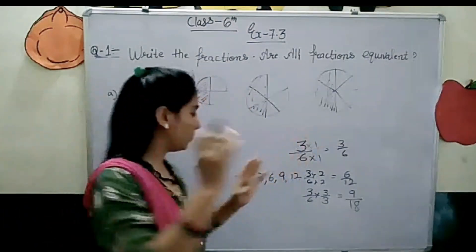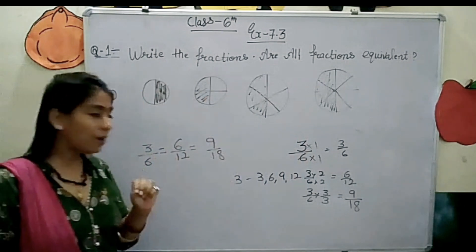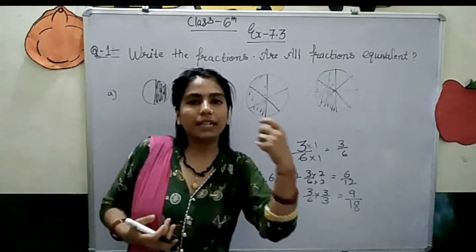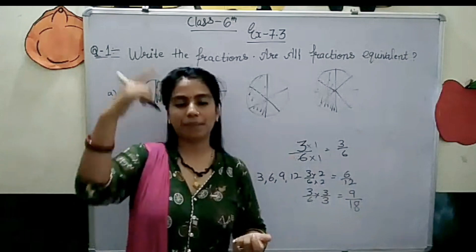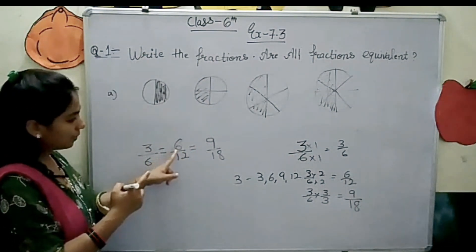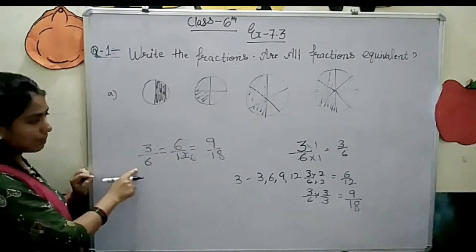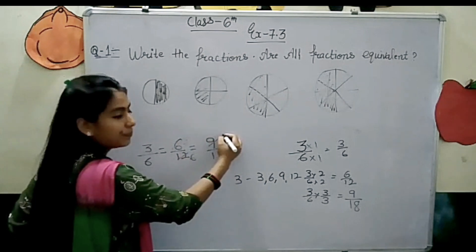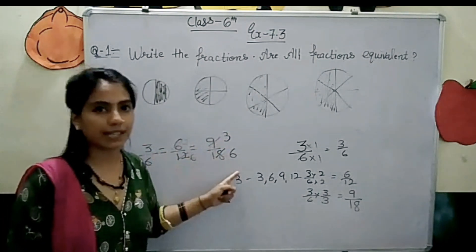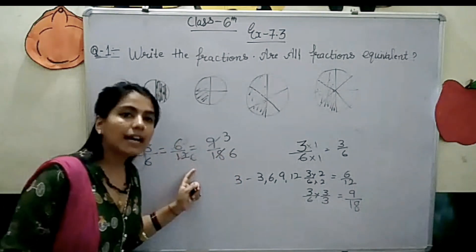So, 3 by 6, 6 by 12, and 9 by 18 are all equivalent fractions of 3 by 6. Equivalent fraction means they are all equal. How? Whenever we simplify — convert to simplest form, meaning we divide — we get the same value. 6 by 12 divided by 2 gives 3 by 6; 9 by 18 divided by 3 gives 3 by 6. All terms are different but the simplified value is the same: 3 by 6. These are called equivalent fractions.